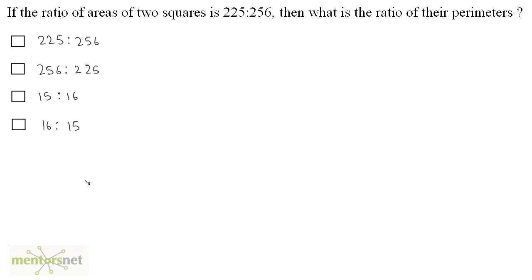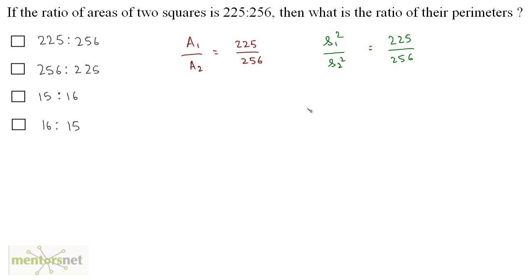If the ratio of areas of two squares is 225 to 256, what is the ratio of their perimeters? You have been given the ratio of the areas: A1/A2 = 225/256. Since area = s², we have s1²/s2² = 225/256. Taking the square root of both sides, s1/s2 = √225/√256 = 15/16.